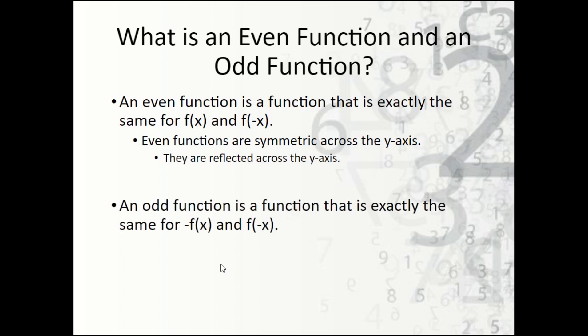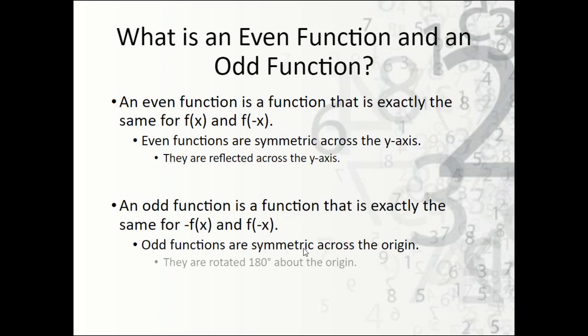An odd function is exactly the same for negative f of x and f of negative x. What this means is they are symmetric across the origin, meaning that they are rotated 180 degrees about the origin.